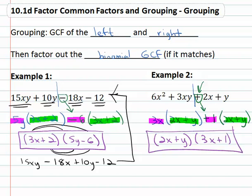Again, if we wanted to check this, we could multiply it out using FOIL, and it would give you the exact same thing we started with. Factoring means write it as a product. If there's no GCF of the whole thing but we have four terms, we can split it left and right and factor out the GCF of each side, and hopefully we'll end up with a binomial GCF that matches.